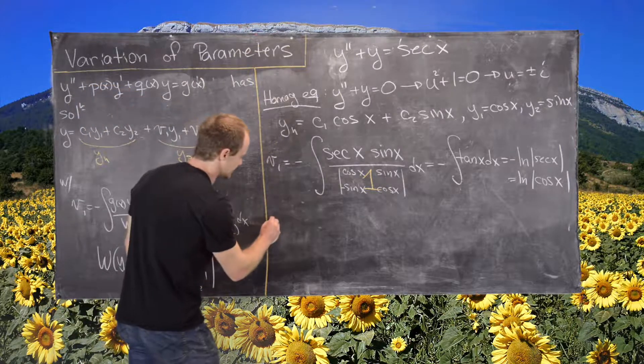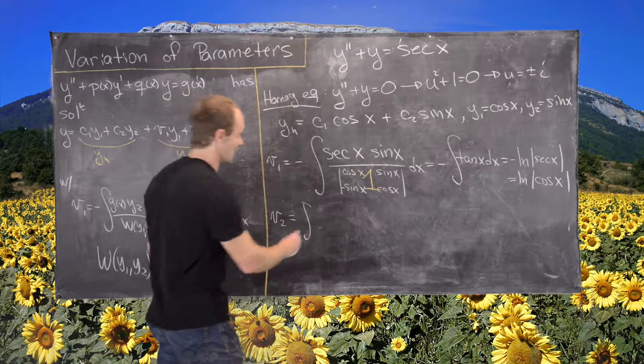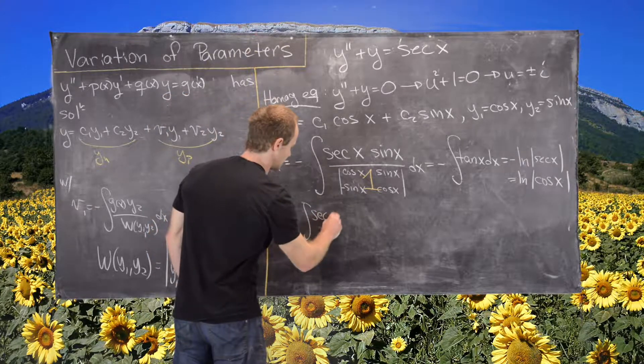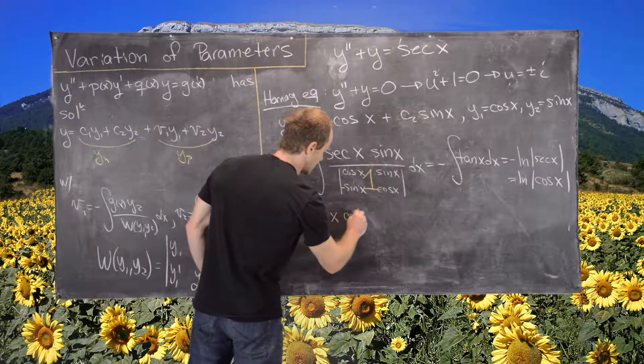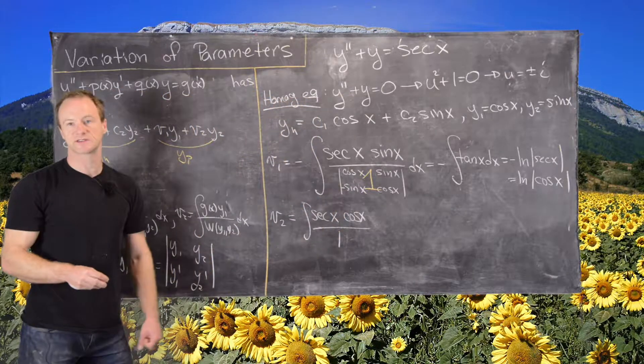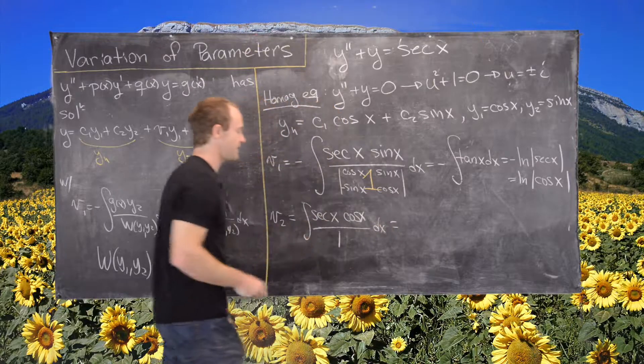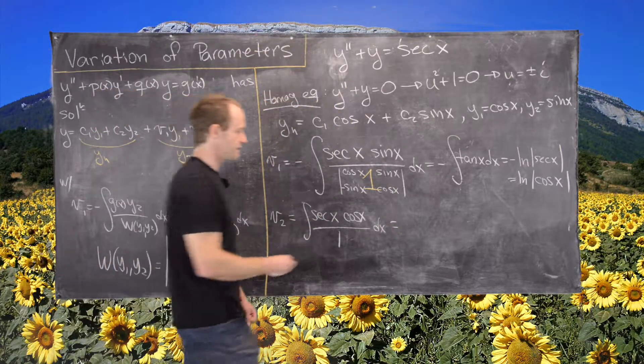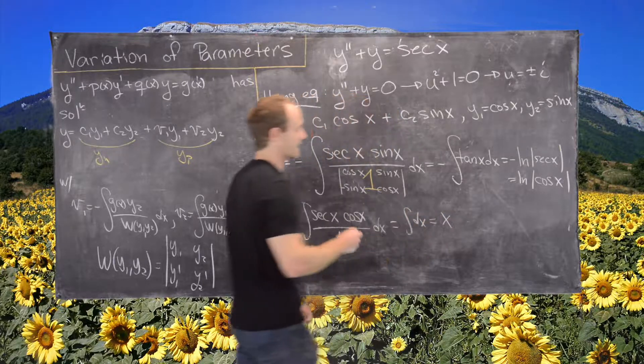Now let's look at v2. So v2 will be the antiderivative of g of x. So that'll be secant of x times y1. So that will be cosine of x over 1 because we calculated that the Wronskian was 1. So secant of x is 1 over cosine. So this will be just the antiderivative dx. So that's just the function x.